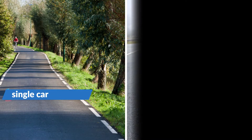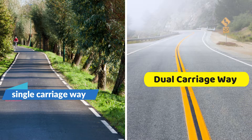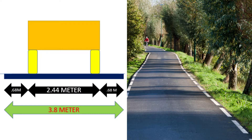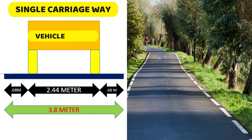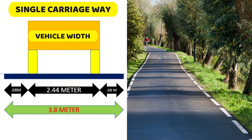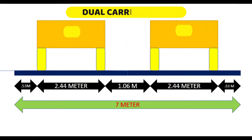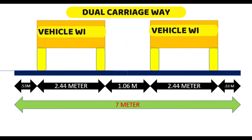There are two types of carriageways: single carriageway and dual carriageway. In the single carriageway, the vehicle width is considered as 2.44m. And in the dual carriageway, the total distance will be around 7m, considering 2.44m single carriageway width.